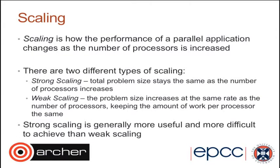Weak scaling is less obvious than strong scaling. Here, as we increase the number of processors, we also increase the problem size N — N doesn't stay fixed, it increases with P. We do this because we want to keep the amount of work per processor the same. That will become clearer later on as we discuss Gustafsson's law.